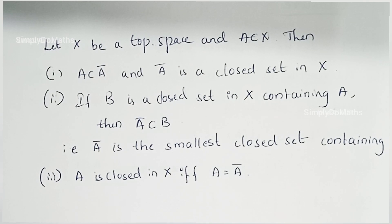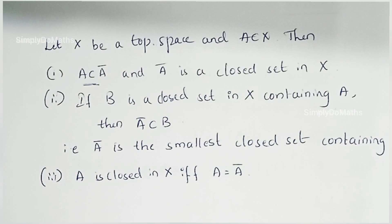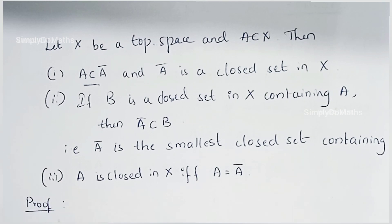Based on this definition, we have very important properties for closure that we'll discuss in this video. Let X be a topological space and A be a subset of X. Then: (1) A is always a subset of Ā, and Ā is a closed set in X. (2) If B is a closed set in X containing A, then Ā is a subset of B — that is, Ā is the smallest closed set containing A. (3) A is closed in X if and only if A equals Ā.